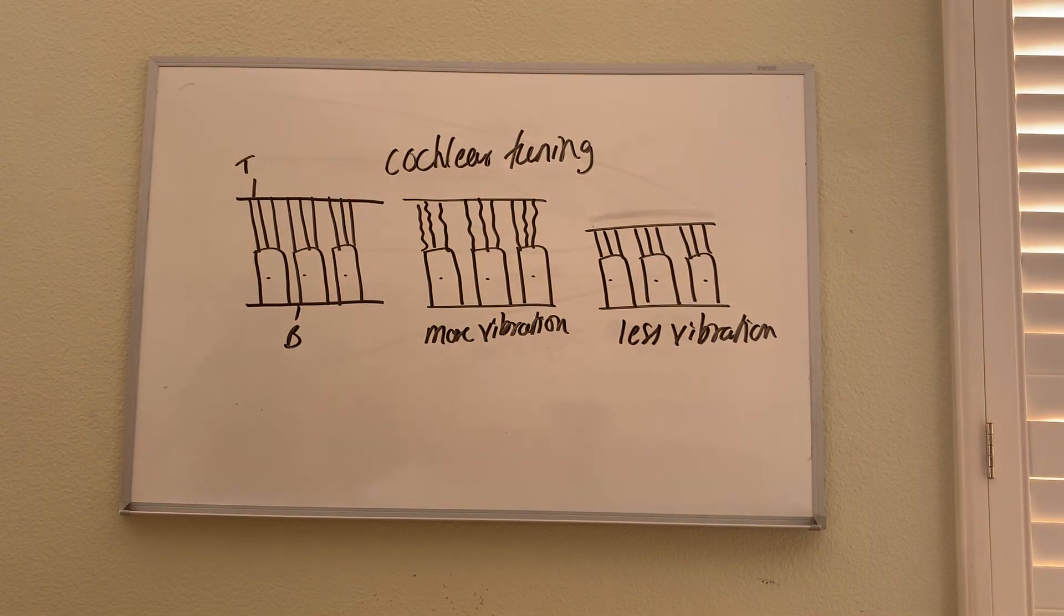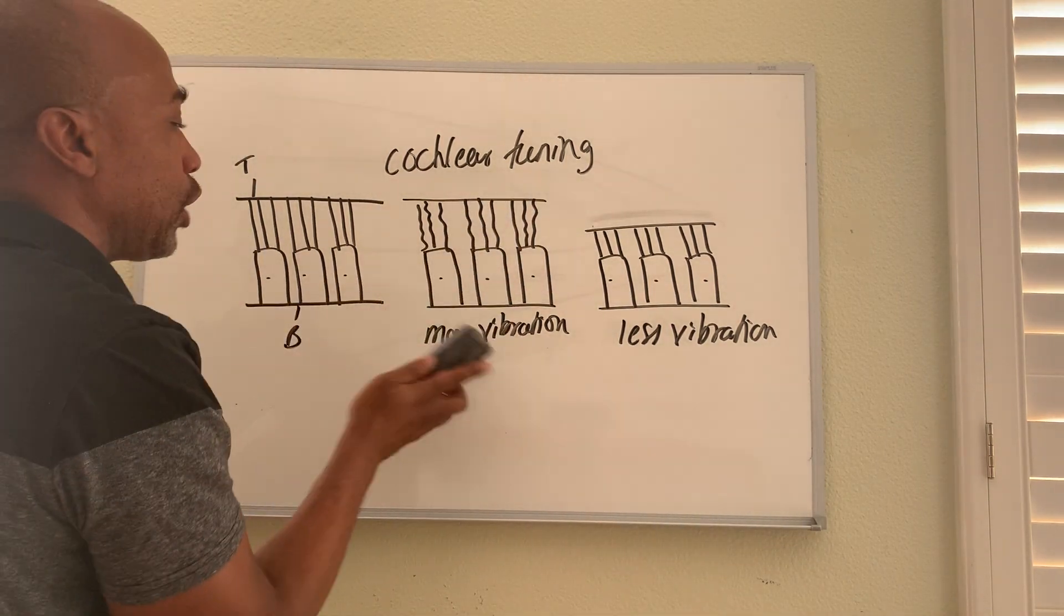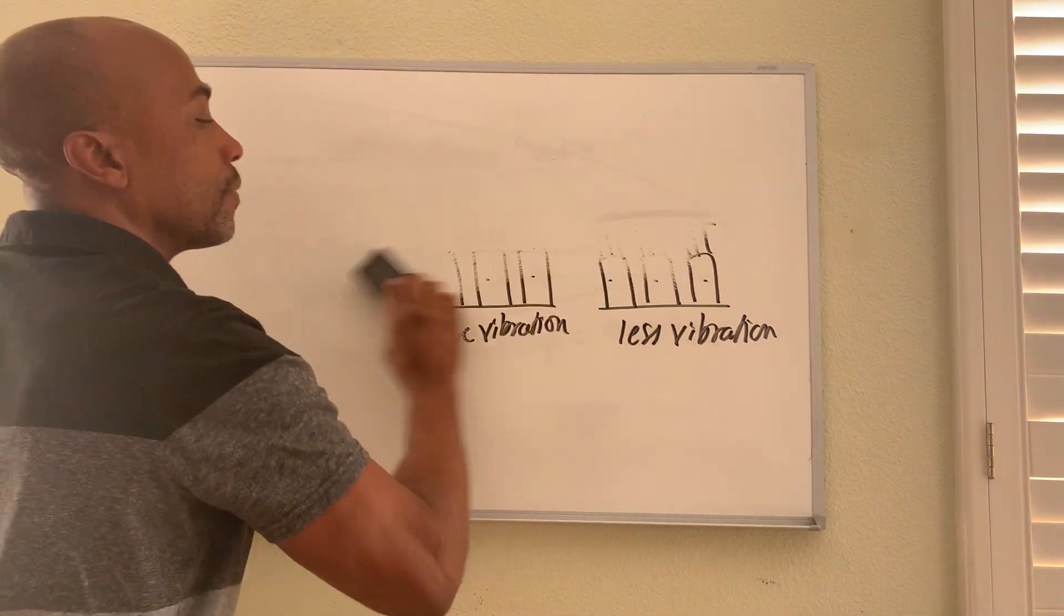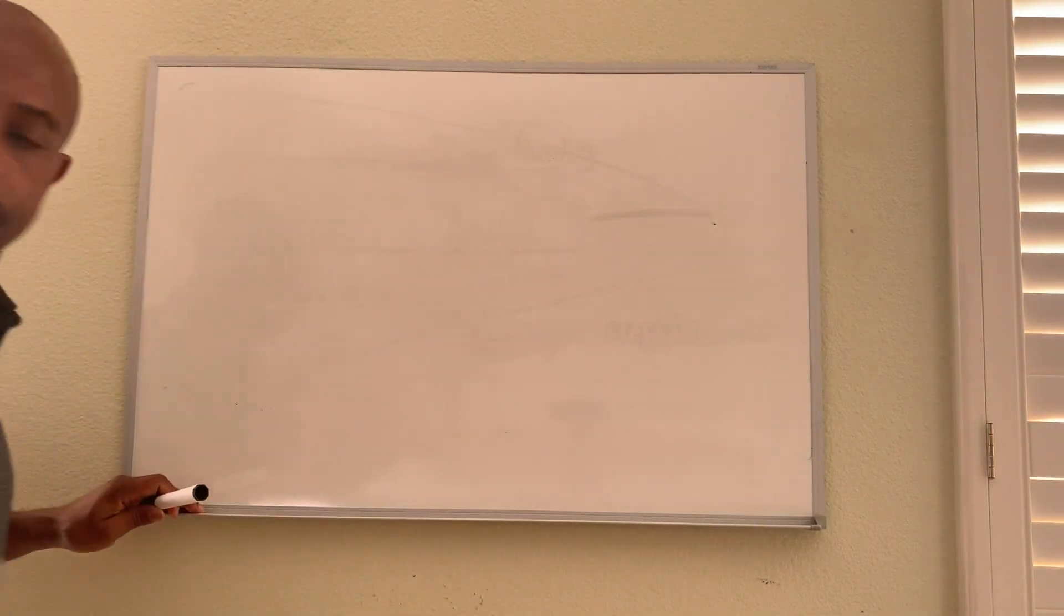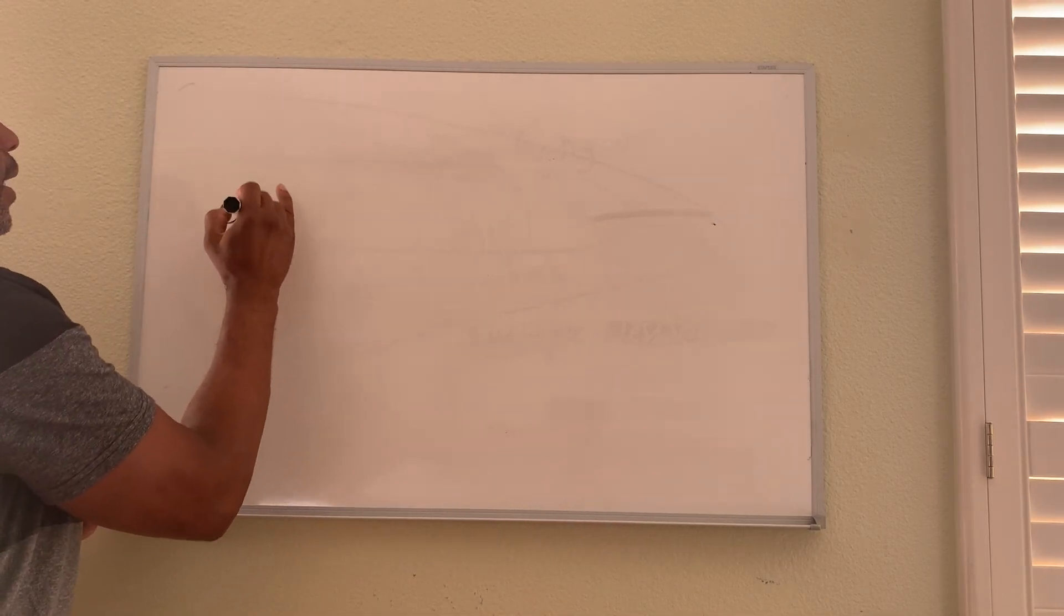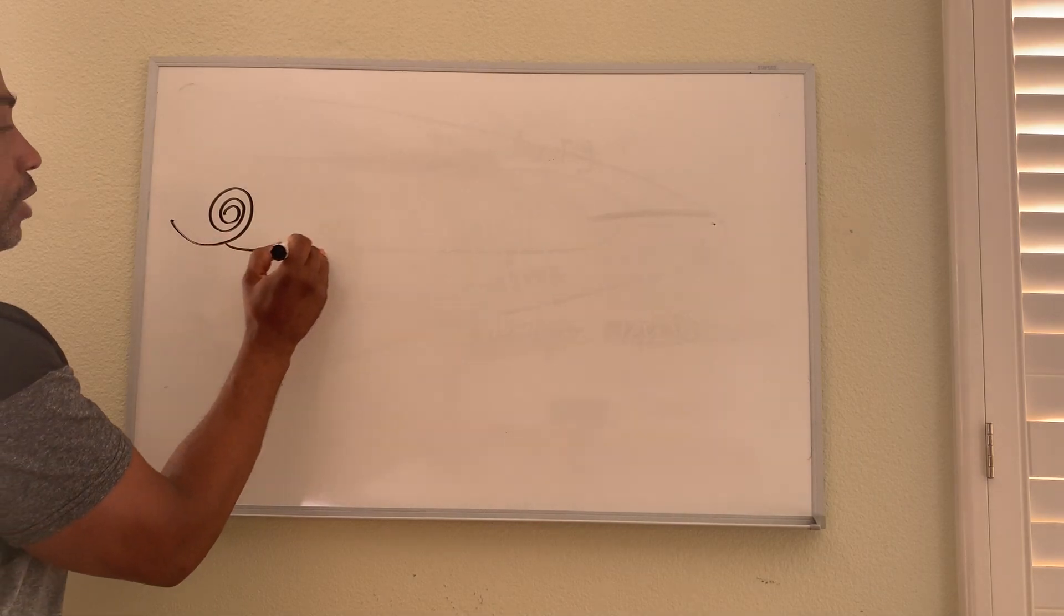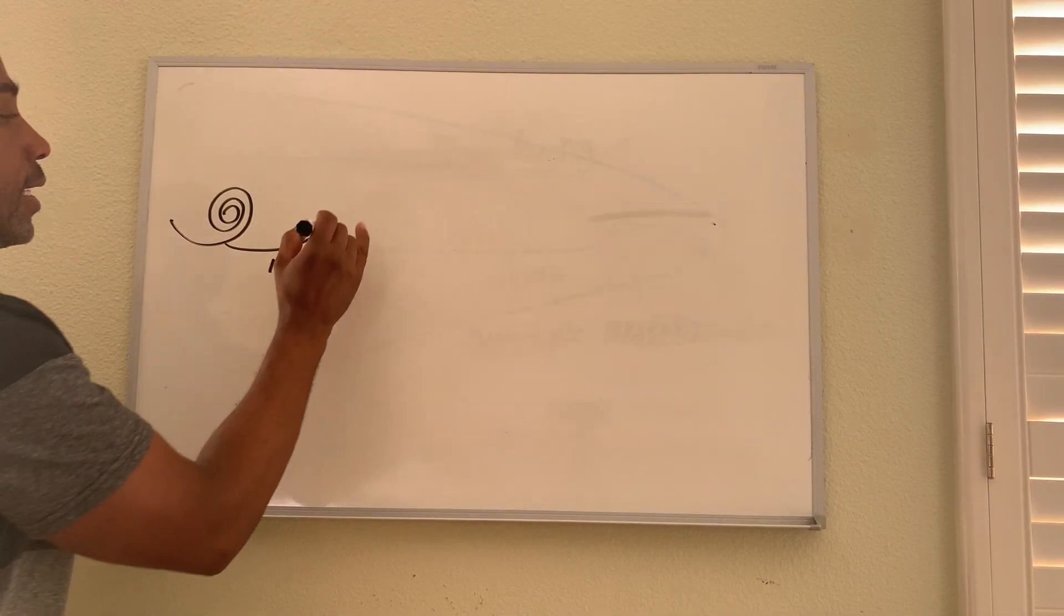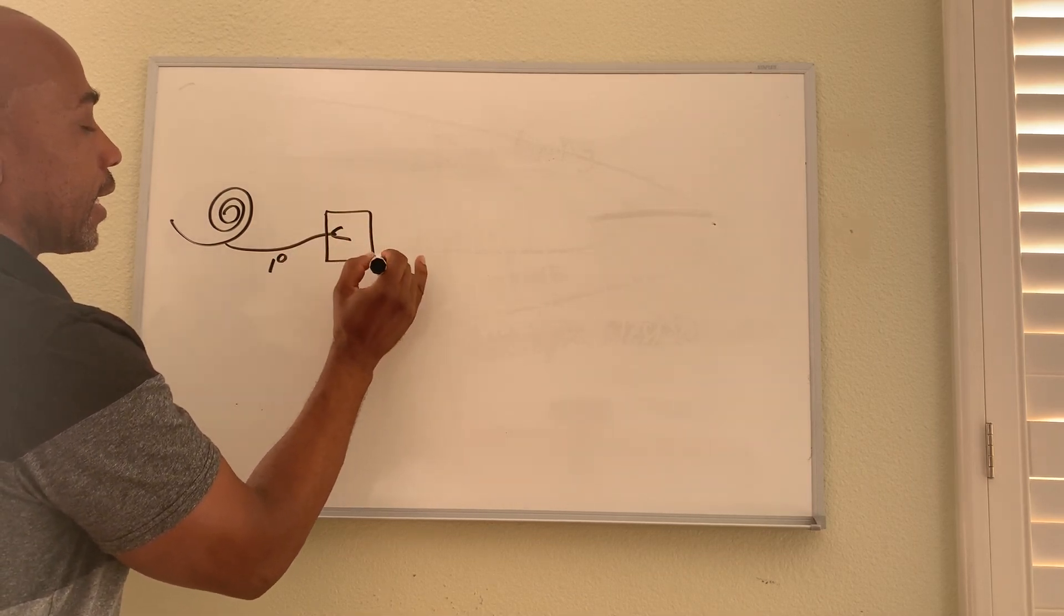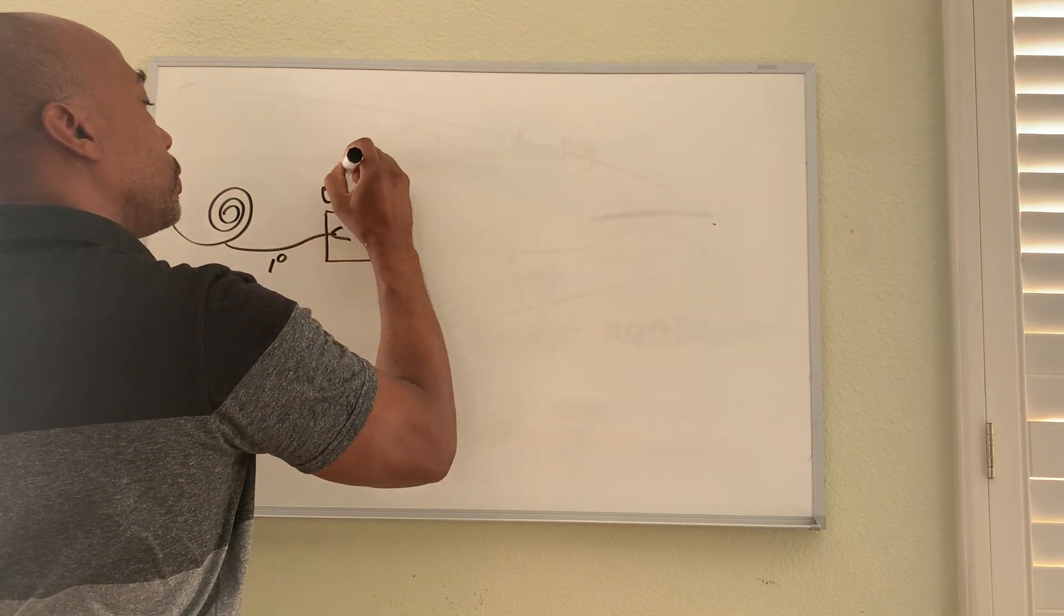Okay, let's do the auditory pathway. The path of sound neurally speaking. So here again we begin in the cochlea. The first neurons travel out, the first order neurons, and these neurons will synapse into a nucleus called the cochlear nucleus.